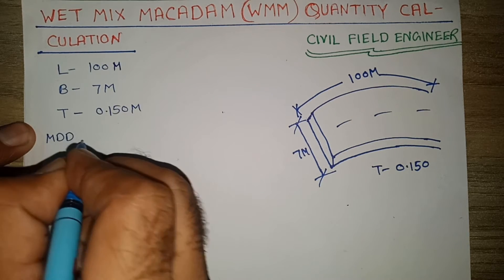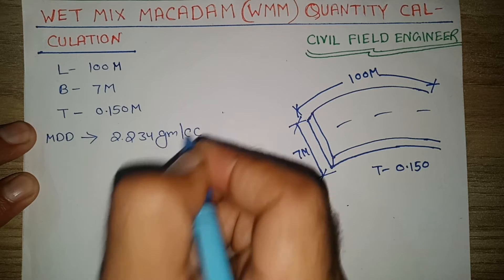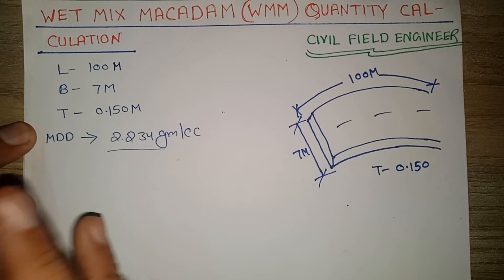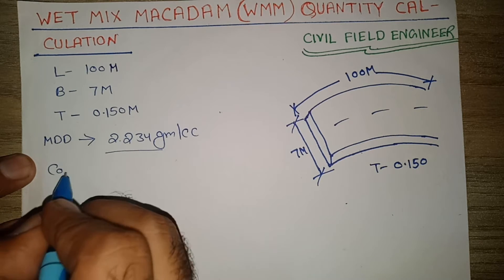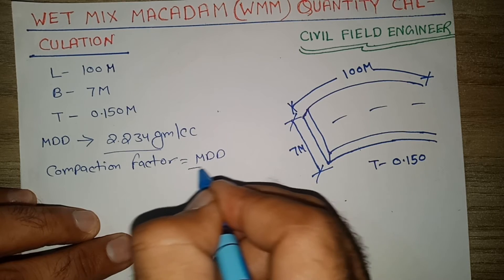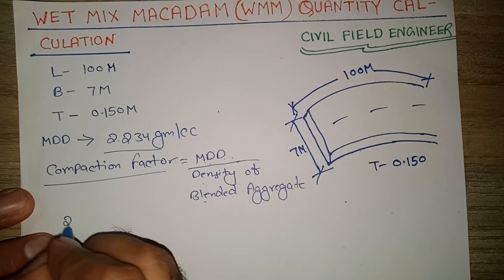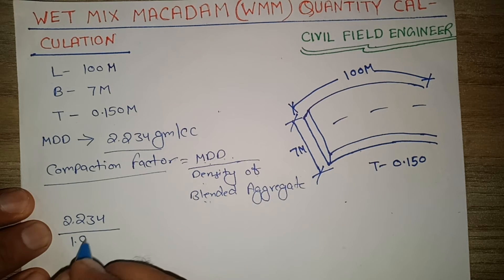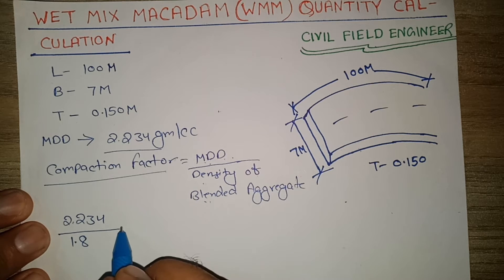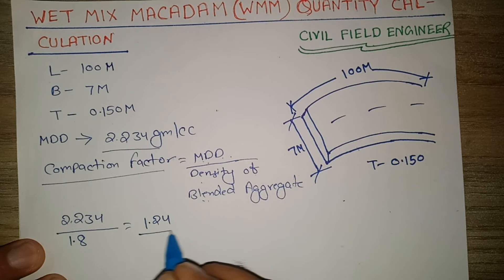MDD — maximum dry density — is 2.234 gram per cc. To find loose thickness, you have to apply the compaction factor. The compaction factor formula is MDD divided by density of blended aggregate: 2.234 gram per cc divided by 1.8 gram per cc, where 1.8 gram per cc is the density of blended aggregate. Dividing both densities gives 1.24, which is the compaction factor.